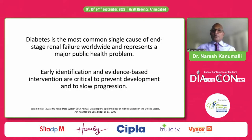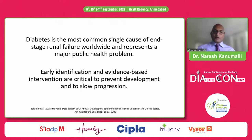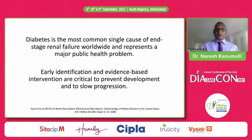Diabetes is the single most common cause of end-stage renal failure worldwide and represents a major public health burden. The incidence and prevalence of diabetes is very high in India as well, so this represents similar problems across the world. Early identification and evidence-based intervention are critical, just as with identification of Modi and early identification and treatment of people with cardiac disease.